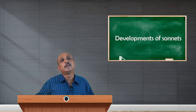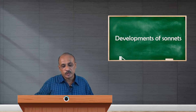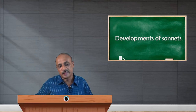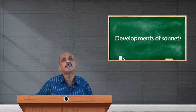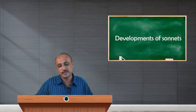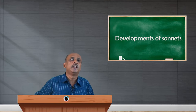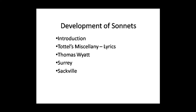The early sonnet writing was metrically speaking rhymed with ABAB, CDCD, EFEF, and G. They were basically three stanzas of four lines each and a couplet.